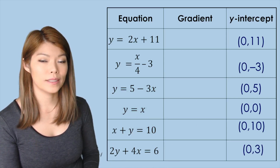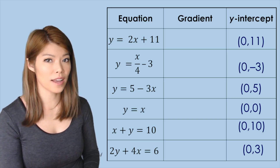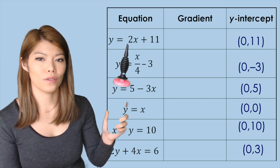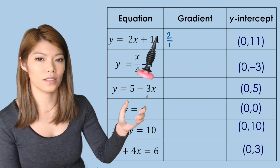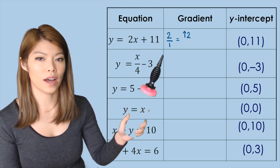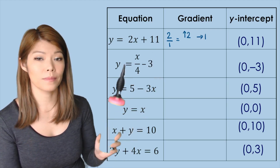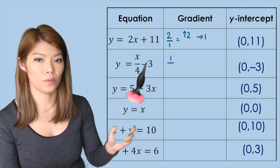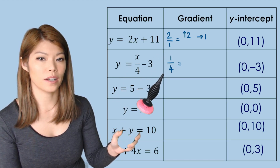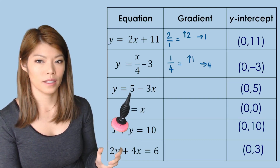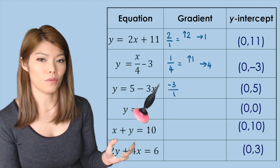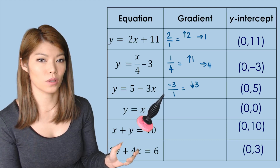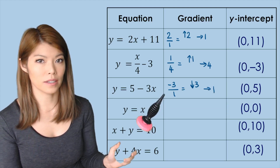For the gradient, we separate it into rise and run. For a gradient of 2, that's 2 over 1 — rise 2, run 1, so up 2 and across 1. For a gradient of a quarter, rise is 1 and run is 4. For a gradient of minus 3 — that's minus 3 over 1 — the rise is down 3 because it's negative, and the run is always positive, so going right by 1.